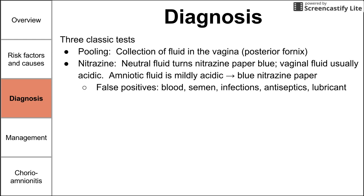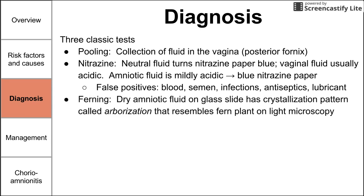If the cervix is bleeding, the nitrazine test may not be accurate, as blood can alter the results. The third test is ferning, where dry amniotic fluid on a glass slide is examined under the microscope. When amniotic fluid dries on the slide, it sometimes shows a crystallization pattern called arborization, which resembles a fern plant.